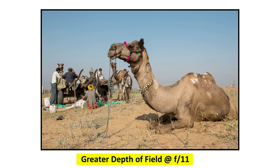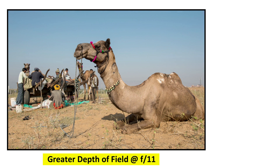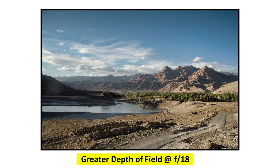If you want a greater depth of field, you need to increase your F number, because you want both the background as well as foreground in focus, crisp and sharp. F11 will give you a very good depth of field. Moving ahead, if you want even greater depth of field, you can further increase the F number to F18 if the lighting condition is very good. In this case also, you do not have to worry about the shutter speed.